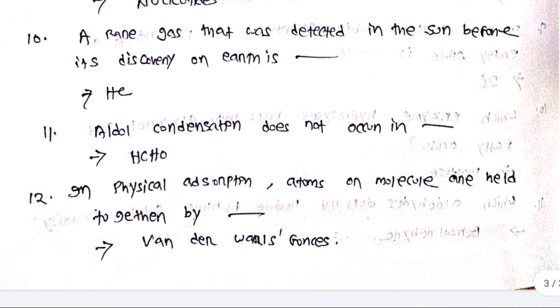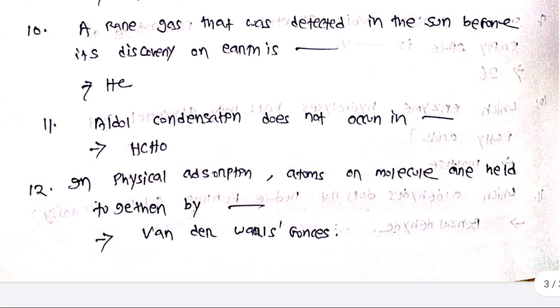A rare gas that was detected in the sun before it was discovered on earth is He. Aldol condensation does not occur in HClO.